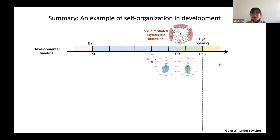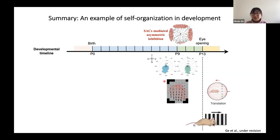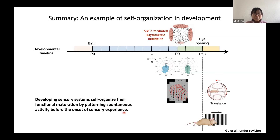Overall, during development we found a transient window where wave directionality exhibits a temporal-to-nasal bias, mediated by asymmetric inhibition from starburst amacrine cells. Interestingly, directional bias waves resemble the future optic flow from the animal's forward self-motion, and the wave directionality helps the development of motion detection in downstream visual areas such as the superior colliculus. Our results suggest a very smart and efficient way of sensory system development: the developing sensory system primes itself for the most likely visual inputs by generating spontaneous activities that mimic the important features of future sensory inputs.